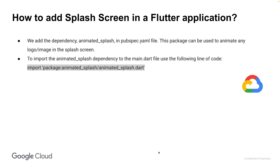Next, to import the animated splash dependency in our main.dart file, we use the following line of code: import package:animated_splash_screen/animated_splash_screen.dart.